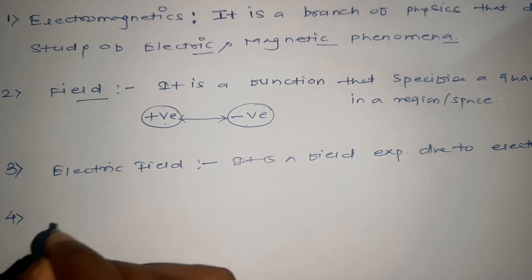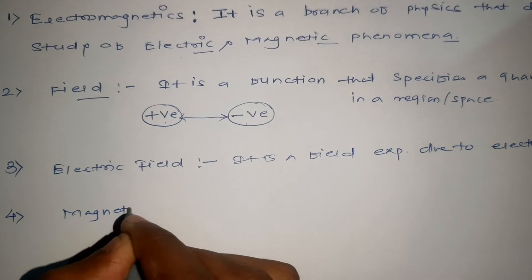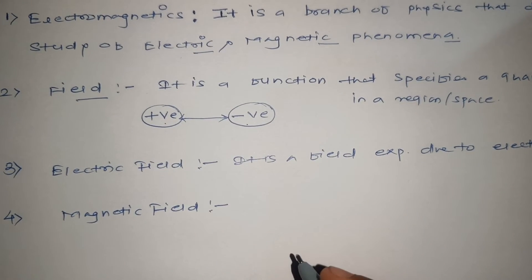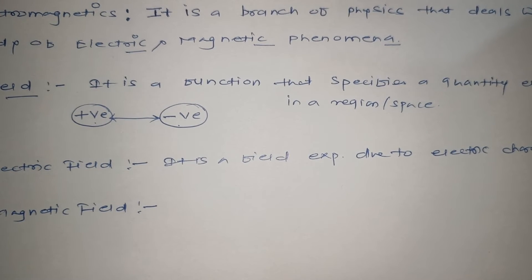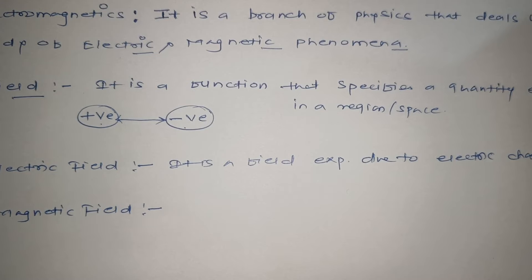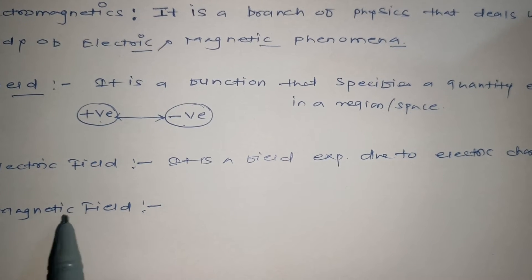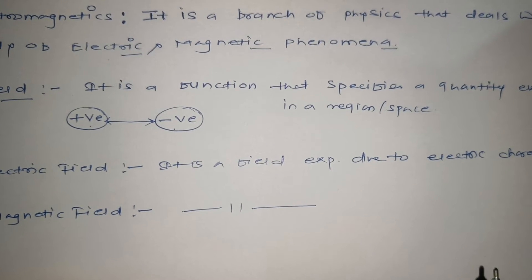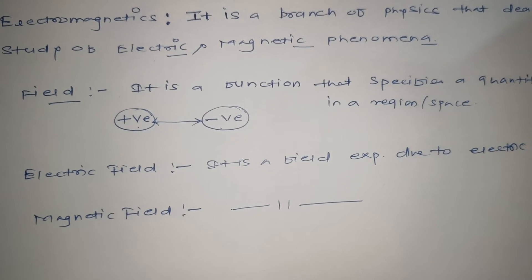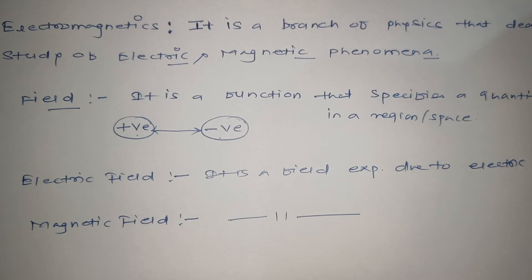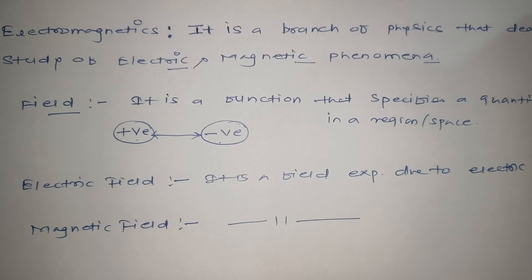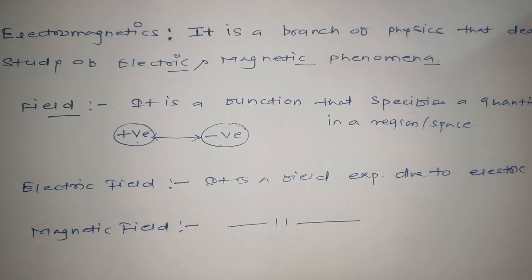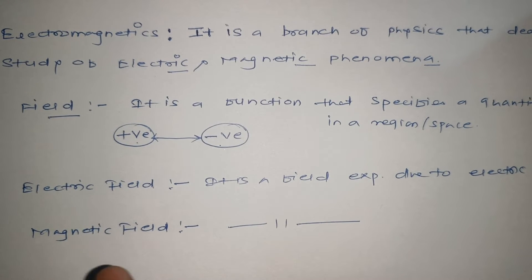The second type is magnetic field. The simple definition is that it is a field experienced due to magnetism — specifically, a field experienced due to magnetic charges or magnetic force. So basically, we are having two types: electric field and magnetic field.